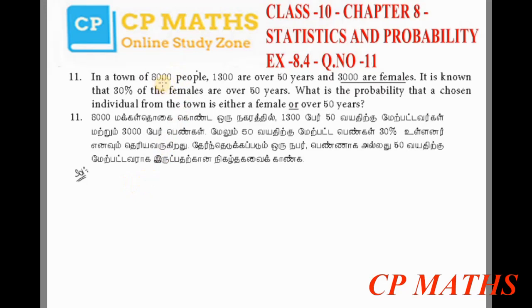Okay, first n(S) - the total in the town will be 8,000 people. So n(S) equals 8,000. Okay.